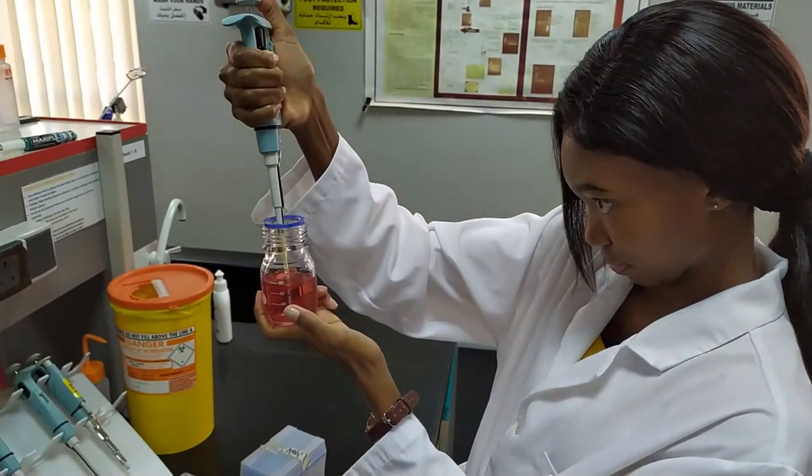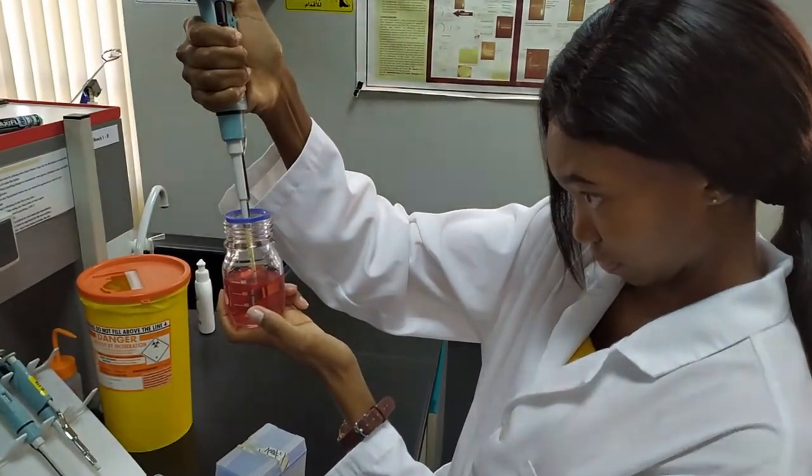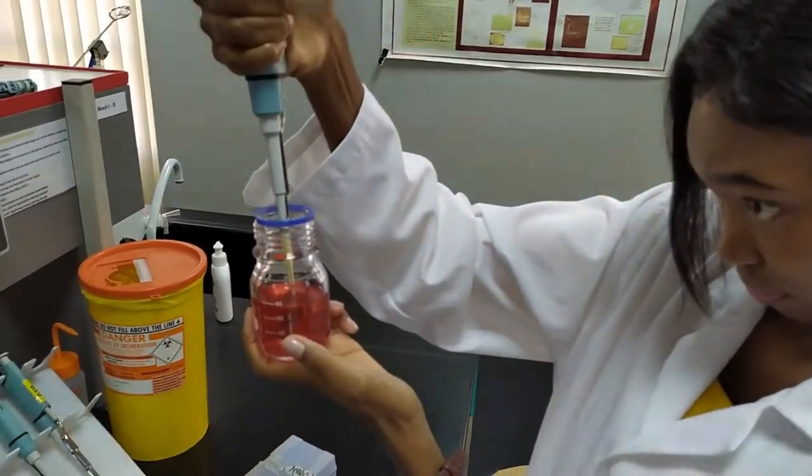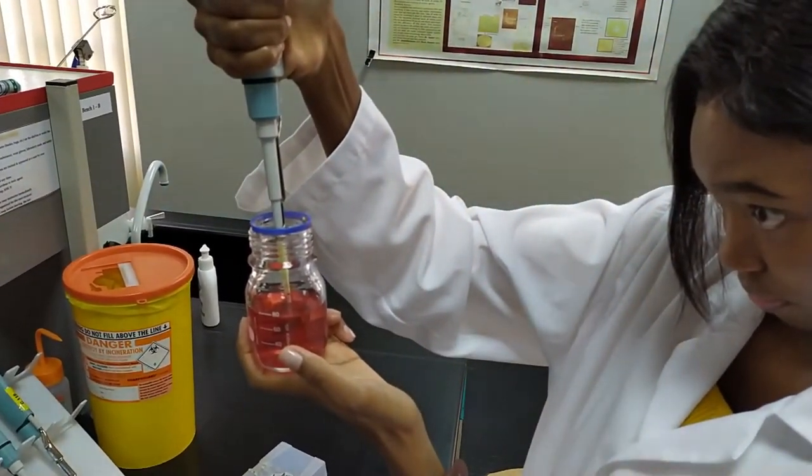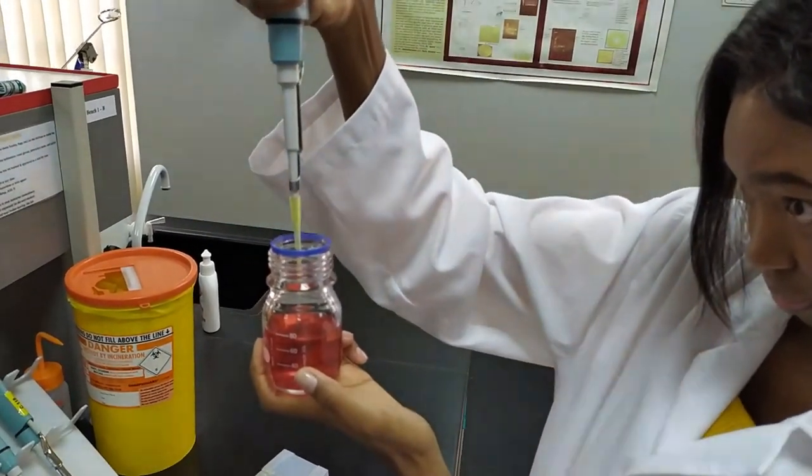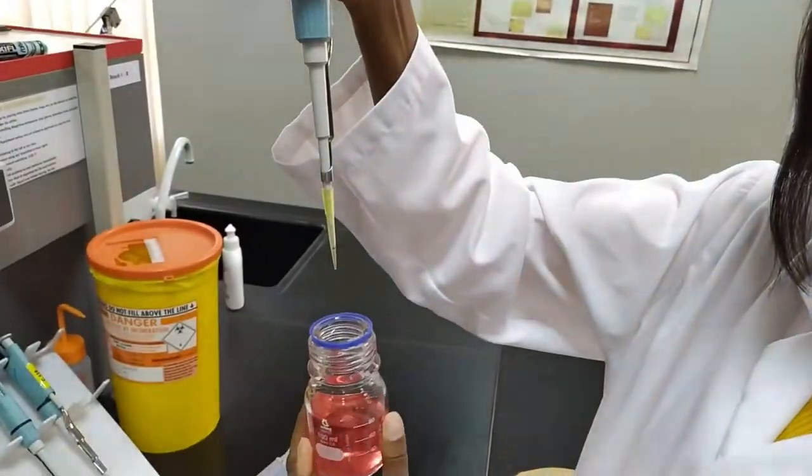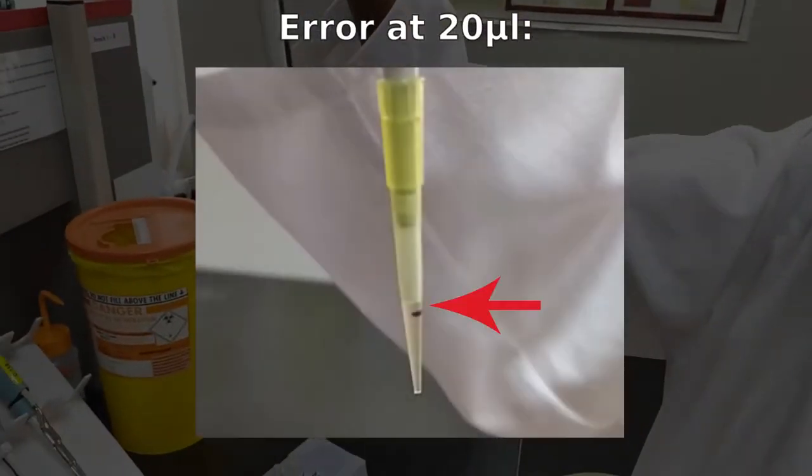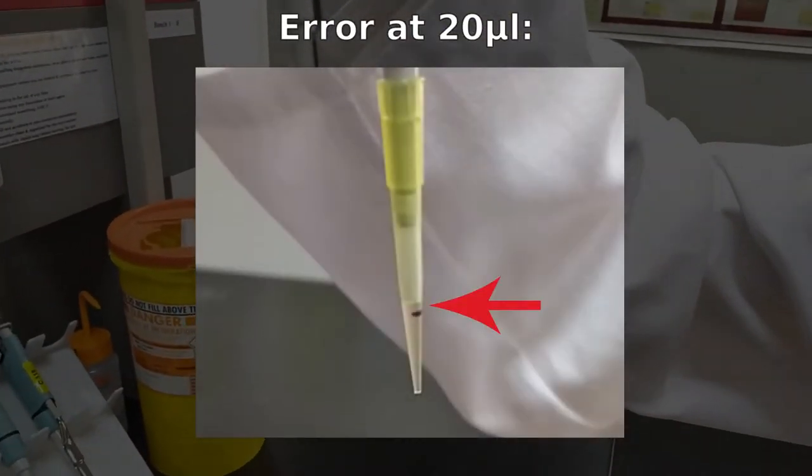Next we're going to have Oconia switch over to a P20. First she's going to show us what it looks like when you go to the second stop at 20 microliters. You can see here that we have a significant amount of liquid above the line.